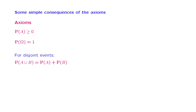The probability axioms are the basic rules of probability theory, and they are surprisingly few. But they imply many interesting properties that we will now explore. We will see that what you might think of as missing axioms are actually implied by the axioms already in place.